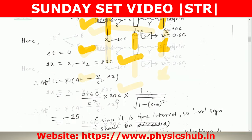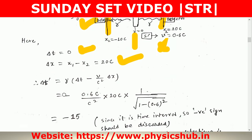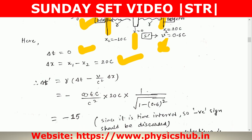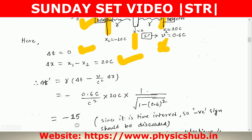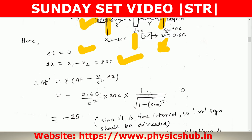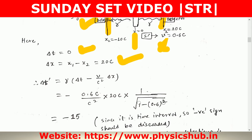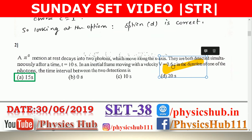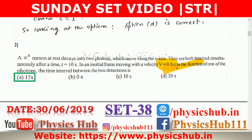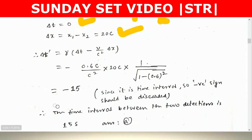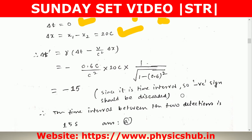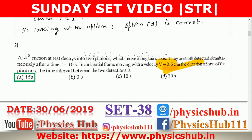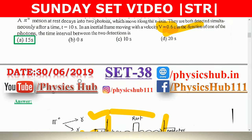We use the formula Δt′ = γ(Δt − v·Δx/c²). Since Δt = 0, Δt′ = −γ·v·Δx/c². With v = 0.6c, γ = 1/√(1 − v²/c²) = 1/√(1 − 0.36). Substituting all values gives Δt′ = −15. Since the time interval cannot be negative, we take the magnitude: 15 seconds. This matches option A, so option A is the correct answer.